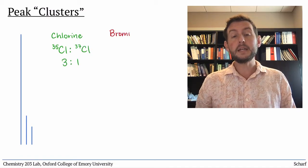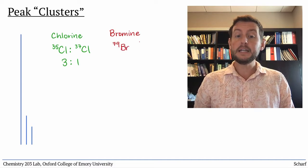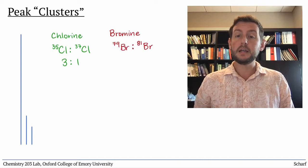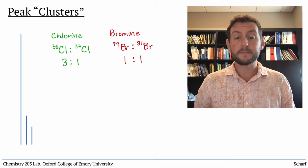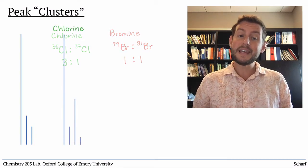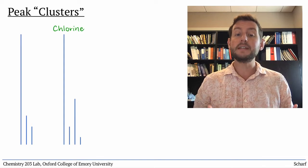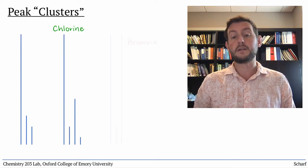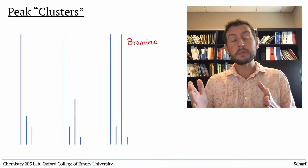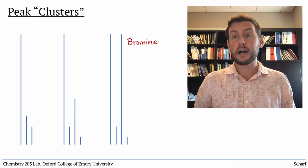And bromine has two isotopes, bromine 79 and bromine 81, in about a 1 to 1 ratio. So a molecule that contains one of these atoms will have a distinctive cluster of molecular ion peaks, with larger peaks two mass units higher than the main peak.